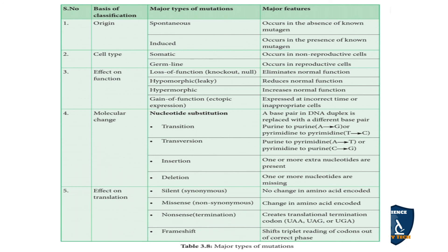Hypermorphic mutation increases the normal function. Gain of function includes ectopic expression, which means expression at an incorrect time or in inappropriate cells. For example, like an unknown person entering a classroom during a lesson — it is a disturbance because it is not the correct time to enter. Similarly, mutation appears at an inappropriate time.